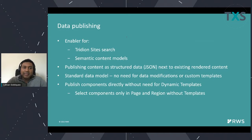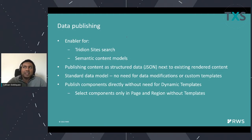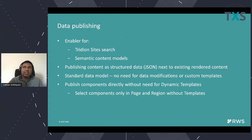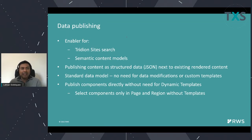This data publishing is an enabler for Tridian site search — the out-of-the-box search capability — and also the enabler for semantic content modeling, which is the evolution of the DXA model service. In 9.5 we can already do this, but in 9.6 we will allow you to have no custom code or configuration at all. The whole content modeling will be driven by the schema defined on the content manager. If you make a change to the schema, that content model automatically becomes available on GraphQL as strongly typed semantic models once published.